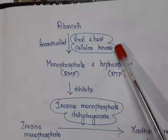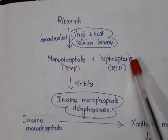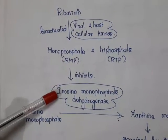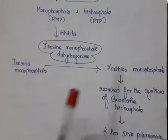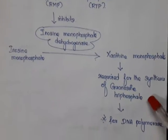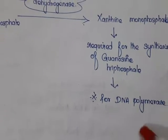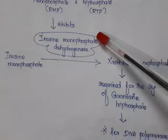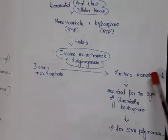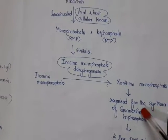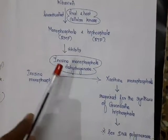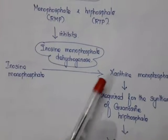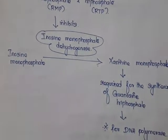The mechanism of ribavirin: it is bioactivated by viral and host cellular kinases to give monophosphate and triphosphate forms. The monophosphate inhibits the enzyme inosine monophosphate dehydrogenase, which normally converts inosine monophosphate into xanthine monophosphate — required for guanosine triphosphate synthesis, which is important for DNA polymerase. Ribavirin blocks this pathway, preventing guanosine triphosphate synthesis.